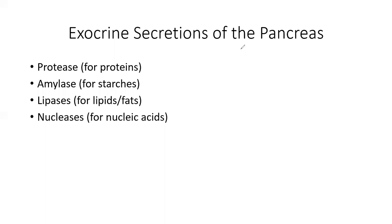The pancreas is part of both the endocrine system — the hormone system — and the exocrine system, secreting enzymes through ducts. In the digestive system, it secretes lots of enzymes: protease for proteins, amylase for starches, lipases for fats, and nucleases for nucleic acids. These enzymes will be secreted into the small intestine, where we complete the digestion and absorption of nutrients.